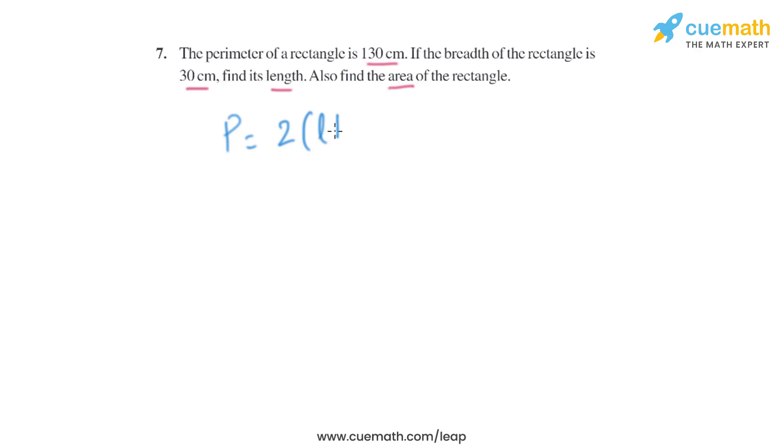is 2(L + B). The perimeter is 130 centimeters and the breadth is 30 centimeters, so we can easily find the length. Multiplying by 2, it becomes 130 cm = 2L + 60 cm.